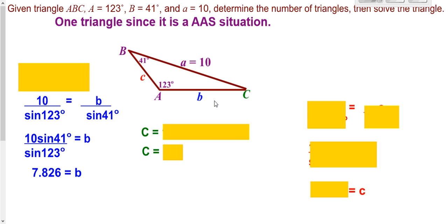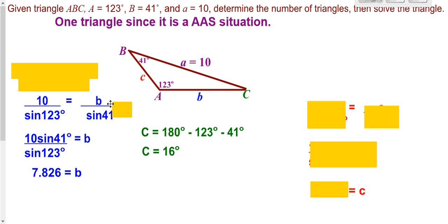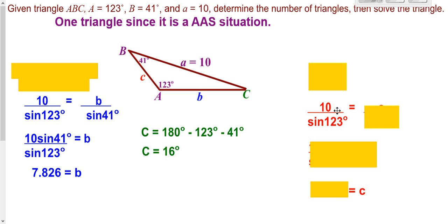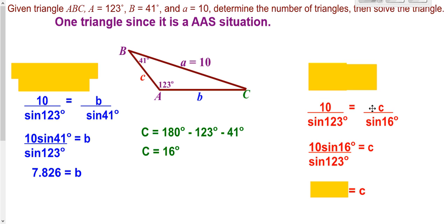Now we can find angle C. We're given two angles, so we can find the third since all angles add up to 180 degrees — subtracting gives us angle C equal to 16 degrees. Now I can use my original opposite pair to find side c. I take side a over sine of angle A equals side c over sine of angle C. I solve for c by multiplying by sine of 16, giving my calculator-ready form to type in and get my approximation.